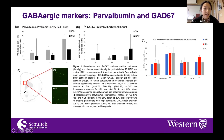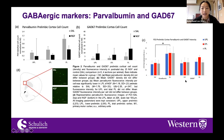My study found that parvalbumin intensity seems to be lower in NGF animals compared to saline control animals, specifically in the lower prelimbic cortex, which I've assigned as layers five and six. We haven't seen significant differences in the density of either parvalbumin or GAD67 positive cells, nor in GAD67 fluorescence intensity levels. However, there does appear to be a layer-specific parvalbumin intensity difference across groups, as expected according to literature from post-mortem schizophrenia studies.